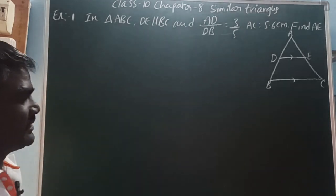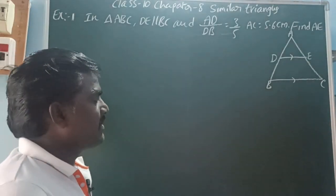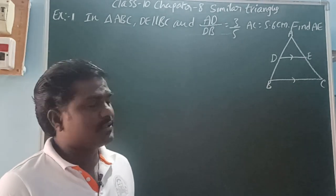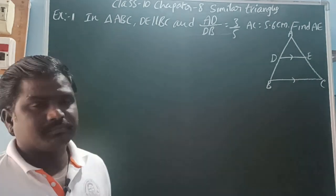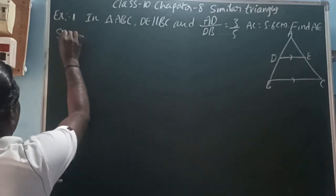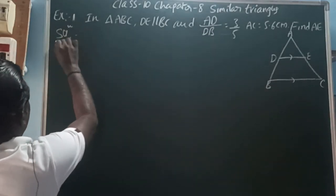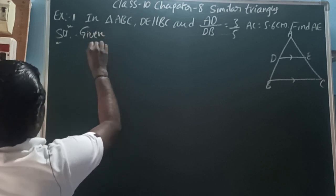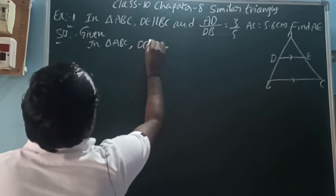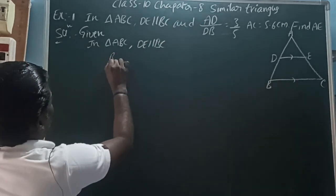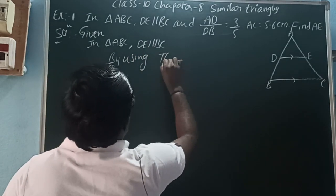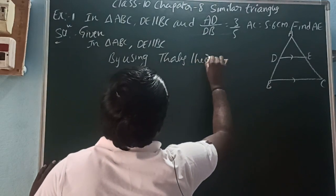In triangle ABC, DE is parallel to BC. AD by DB is equal to 3 by 5, and AC is equal to 5.6 centimeters. Find AE. So here, how can we find AE? Given that DE is parallel to BC, we use BPT, or the Thales theorem.